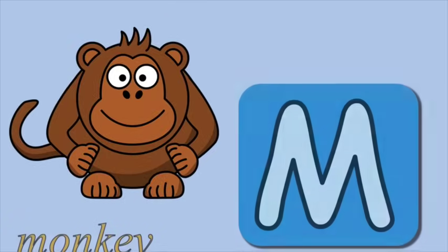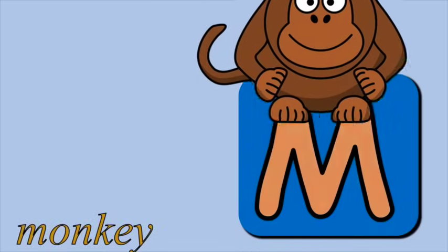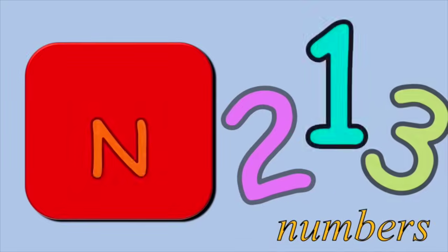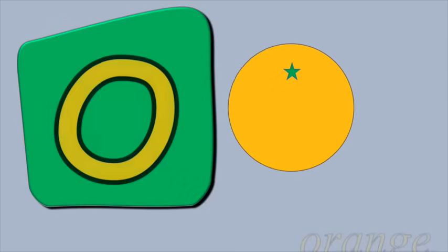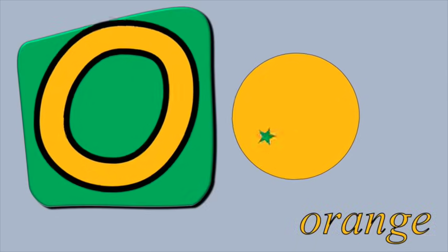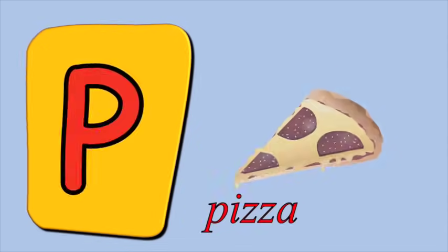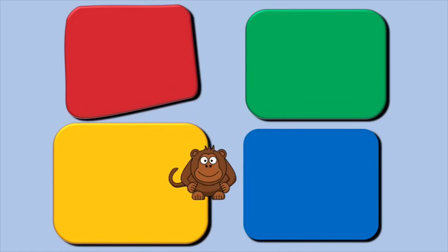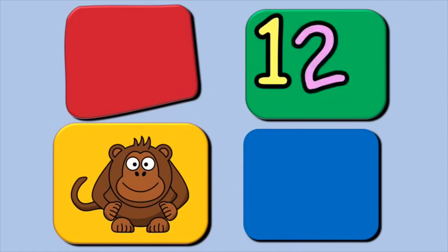M is for monkey, m, monkey. N is for numbers, n, numbers. O is for orange, o, orange. P is for pizza, p, pizza. These are the words from the alphabets.